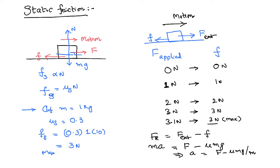With increasing external force from zero up to the maximum static frictional force, the frictional force also increases and reaches its maximum. It is like friction is an intelligent, self-adjusting force. It adjusts itself with respect to the applied force and keeps the body in the state of rest until the applied external force equals the maximum static frictional force. There is no other force in nature that can self-adjust itself. In the previous video we said friction is a necessary evil, and here the key statement is: static friction is a self-adjusting force.